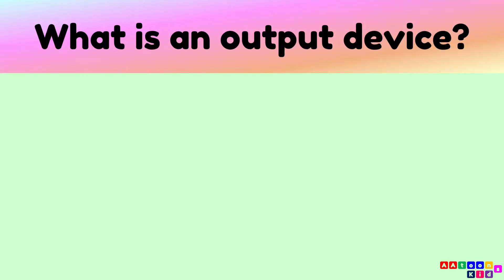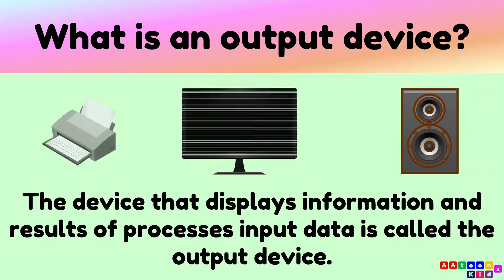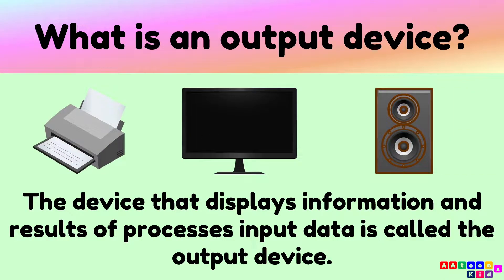What is an output device? The device that displays information and results of the processed input data is called the output device. Printer, monitor, and speaker are examples of output devices.